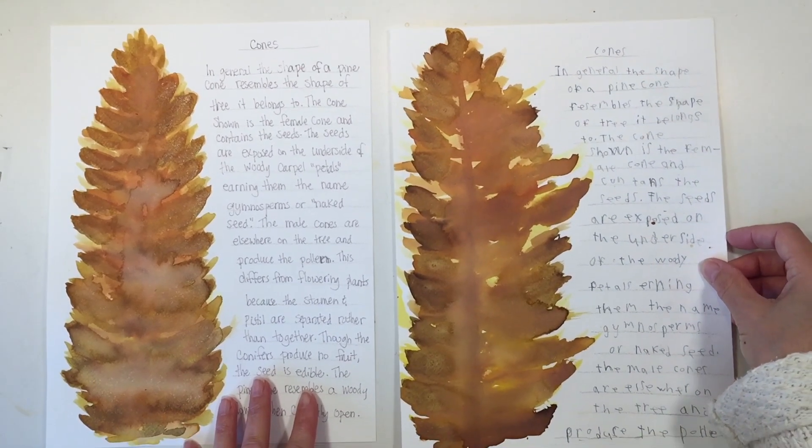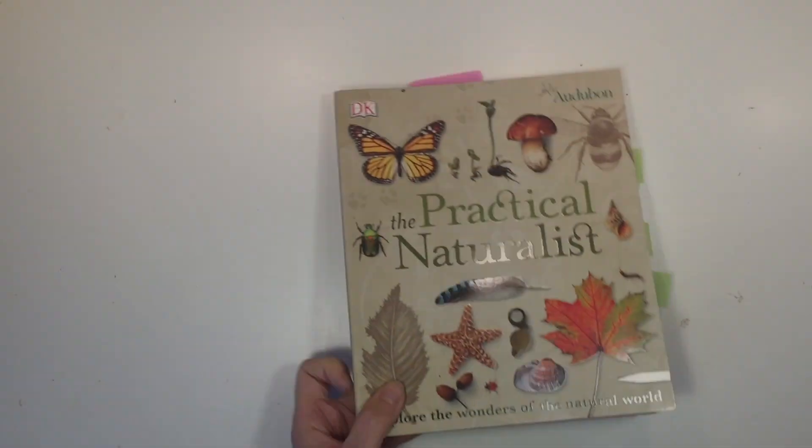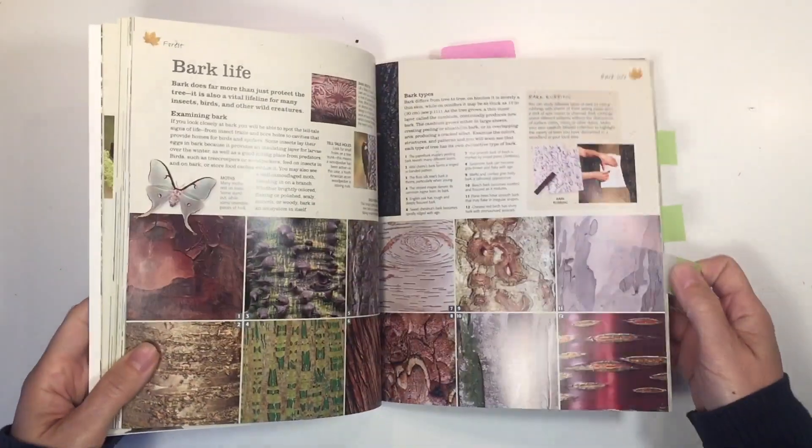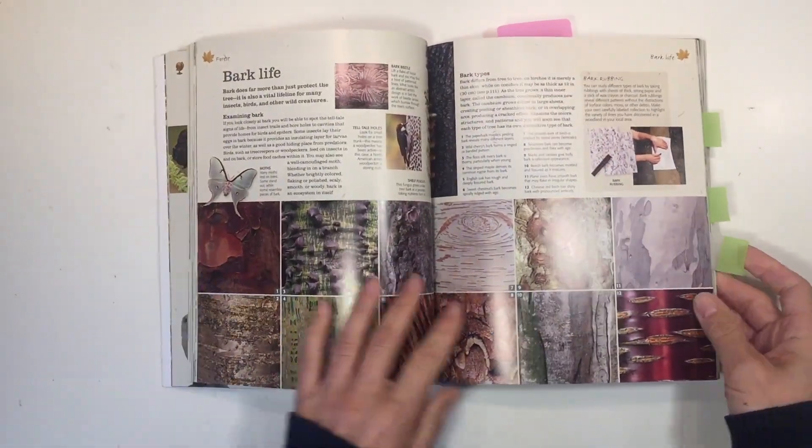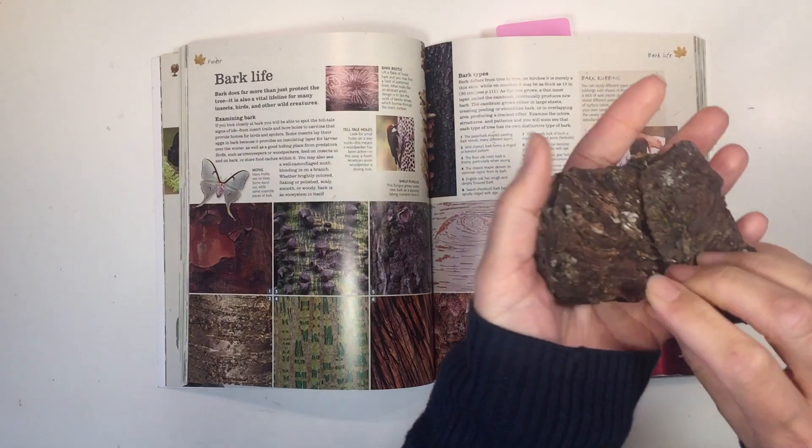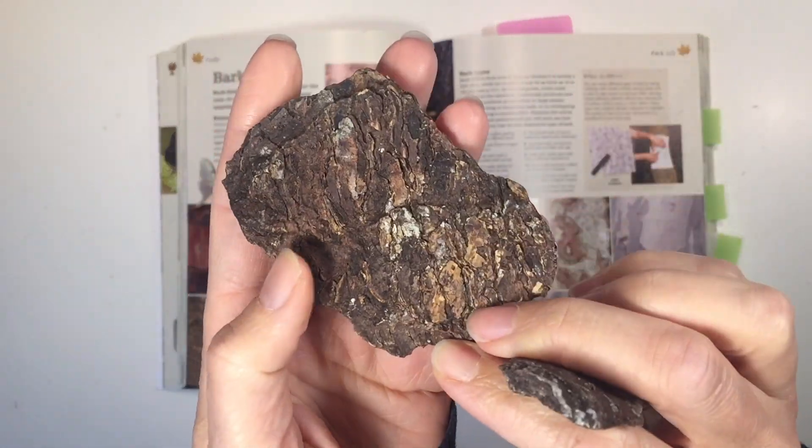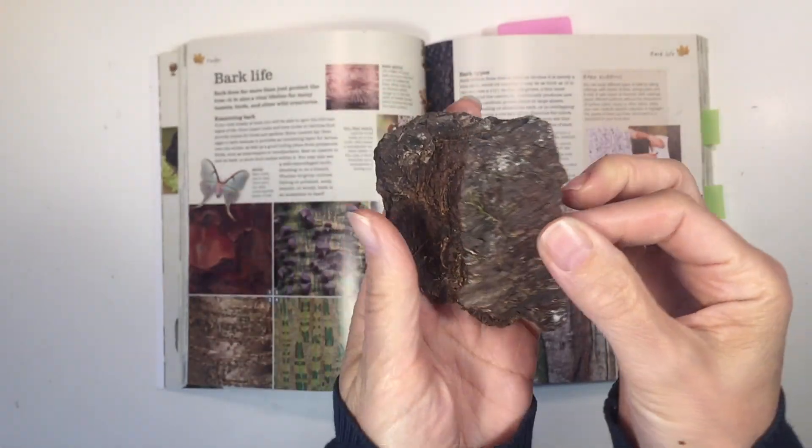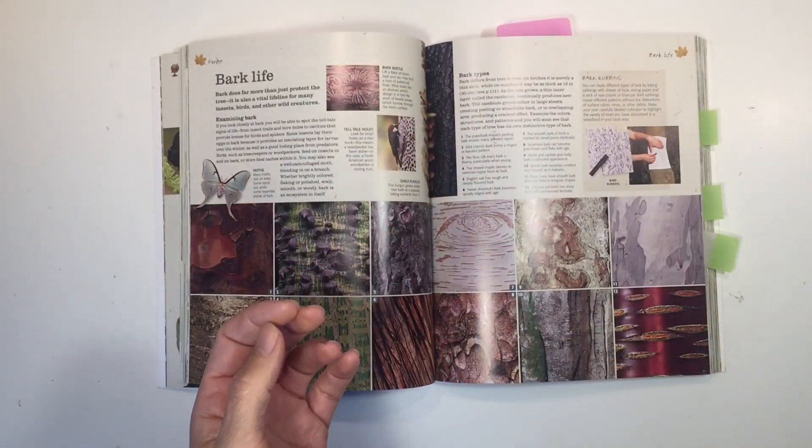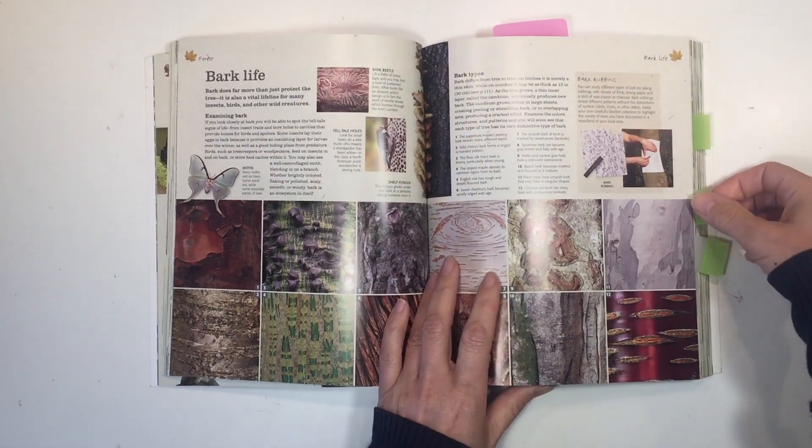Now we're going to move on to another part of this lesson. I've pulled out the Practical Naturalist and there's this section here that showcases different kinds of bark. We have bark from a couple of trees and we just pulled this out to observe and look at and see if we could match it up to one of the images in the book.